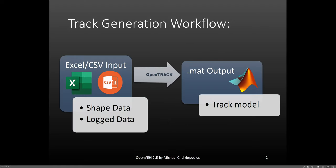What you need to do is select your Excel or CSV file with your track's data and run OpenTrack. What gets created from this is a track model in a .mat file. This .mat file is then used in OpenLab.